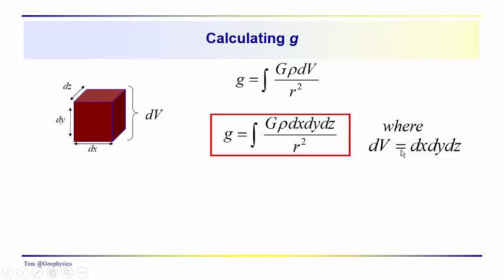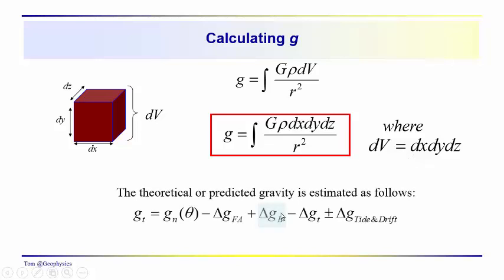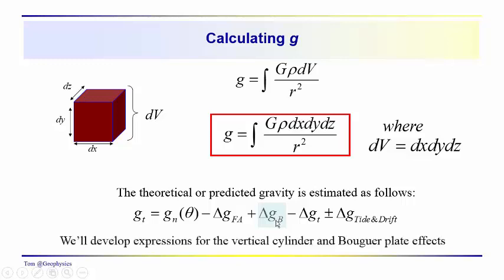In the Cartesian case the differential volume element has dx, dy, dz — we'll take a cylindrical coordinate approach instead. What we're aiming for, in addition to two additional relationships, is to understand where this expression for the Bouguer plate effect, 2πGρt, comes from. So that's what's on the boilerplate for today.